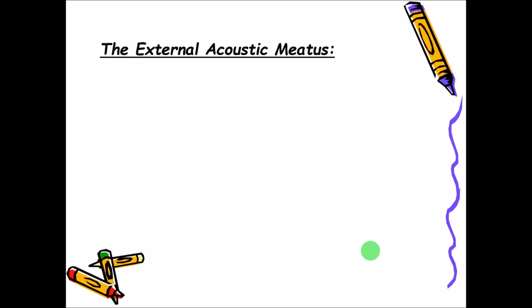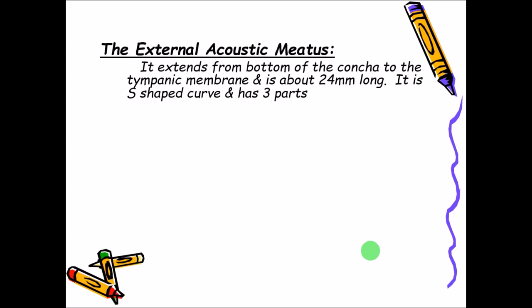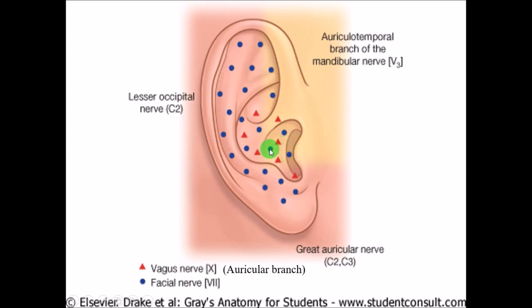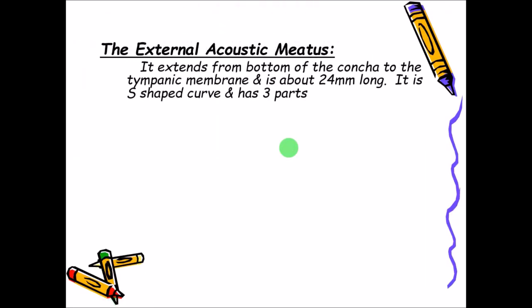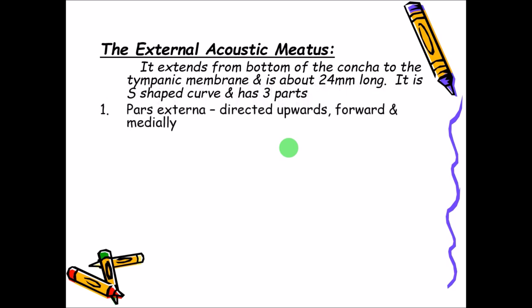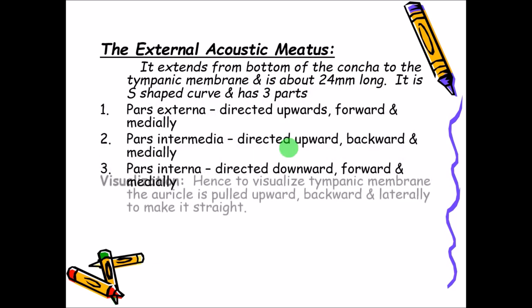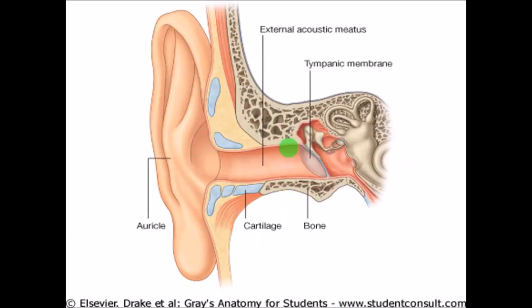Going to the external acoustic meatus — that is the tunnel or tube which is present. It extends from the bottom of the concha up to the tympanic membrane. The total length of this tube, the external acoustic meatus, will be almost 2.4 cm or 24 mm. It is not straight but is slightly curved, even though it is shown as a straight tube in diagrams for simplification.